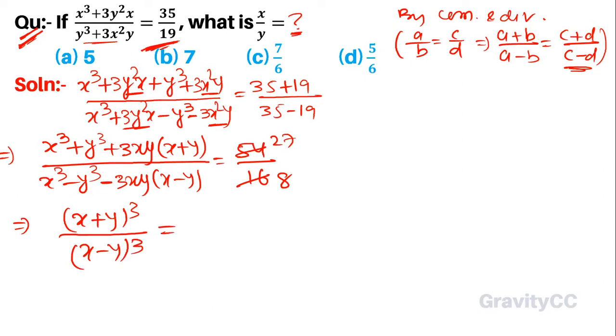So we have 27 over 8, which means x plus y over x minus y whole cubed equals 3 over 2 whole cubed.